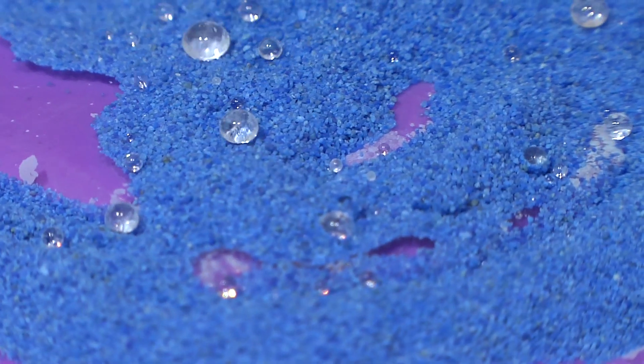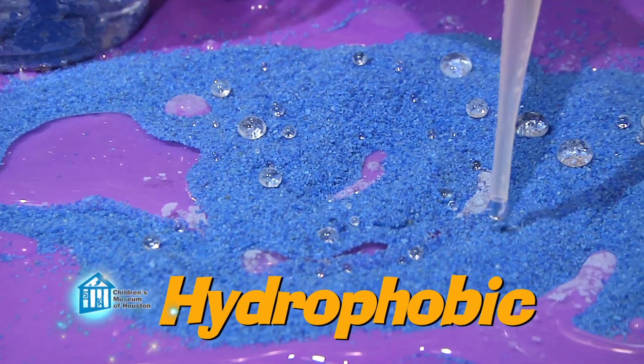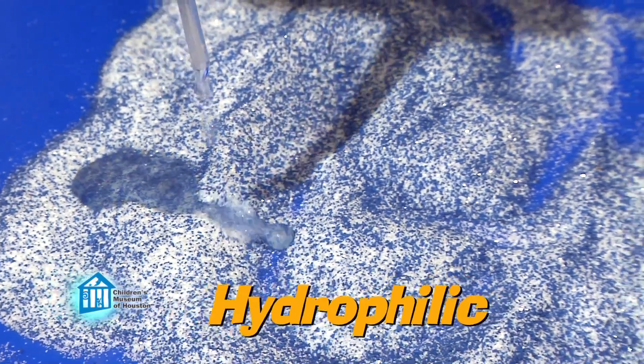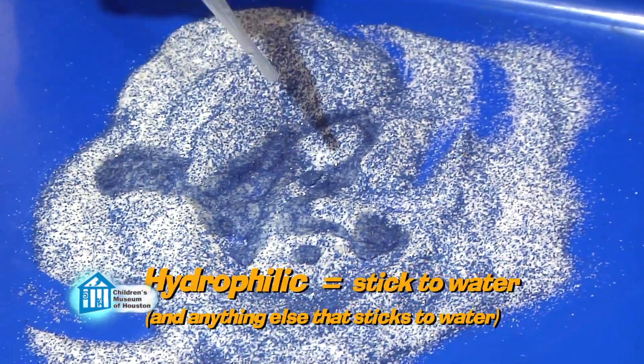Similar to the anti-graffiti paint, the magic sand is covered in nanoparticles that are hydrophobic on one end. That means they repel water. But to get them to stick to the sand, the other end is hydrophilic. That means it likes to stick to water or to things that also stick to water, like sand.